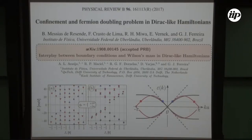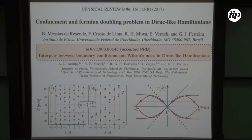I'm going to talk about two works. The first, developed by Bruno and Filippi, is 'Confinement and Fermion Doubling Problem in Dirac-like Hamiltonians' — a methodology to avoid a problem I'll explain. The second work, just accepted for PRB, is the title of this talk: 'Interplay Between Boundary Conditions and Wilson Masses in Dirac-like Hamiltonians.' It's a continuation with a new team.